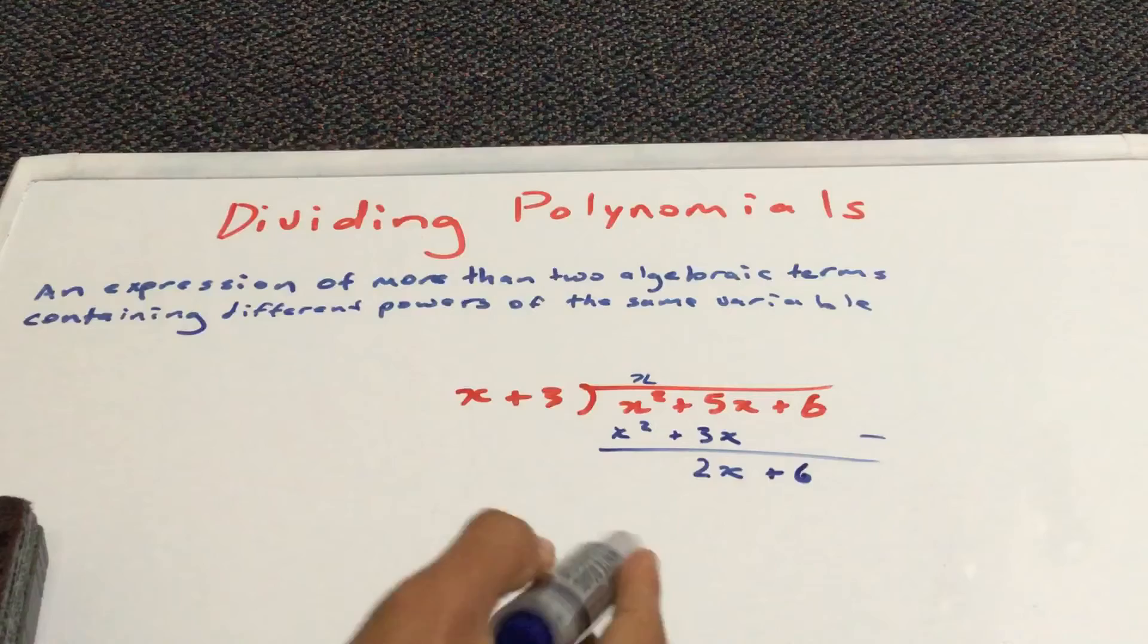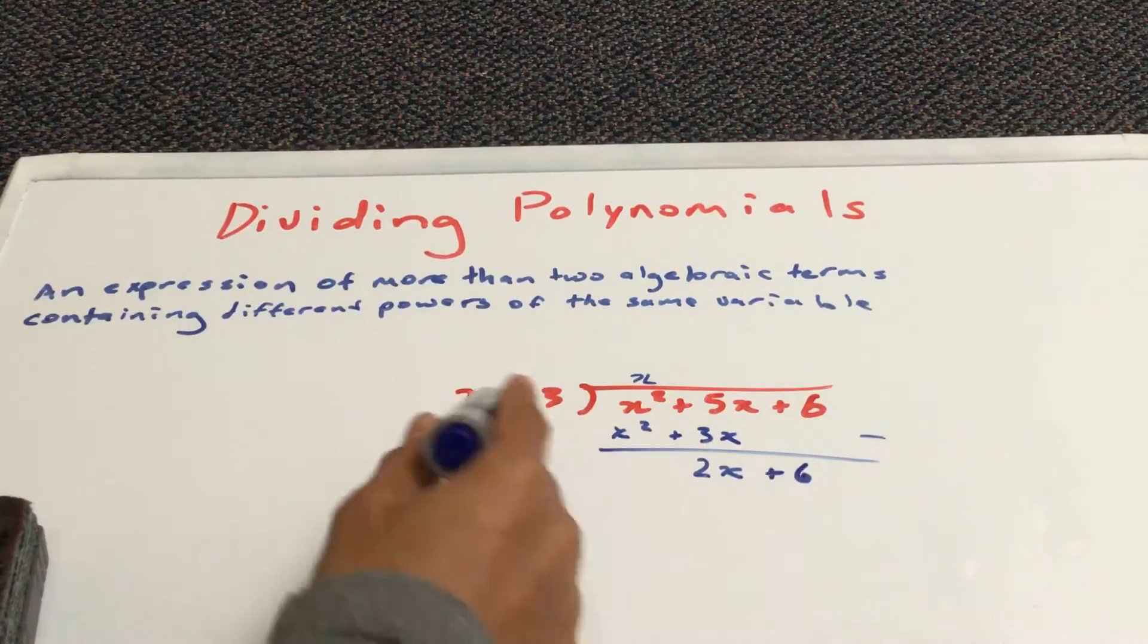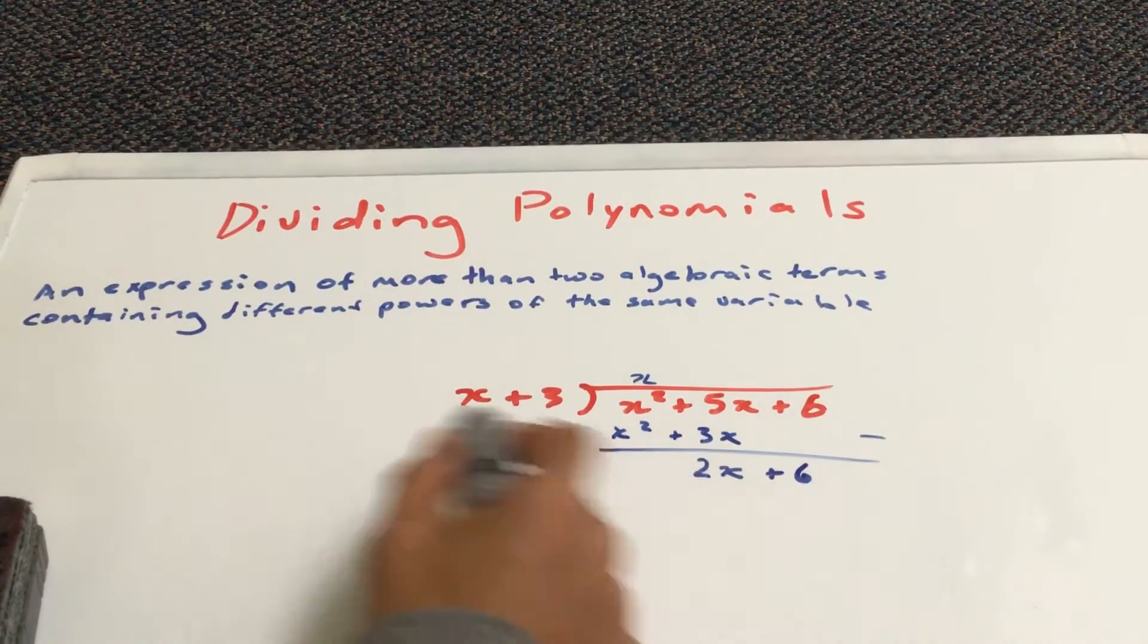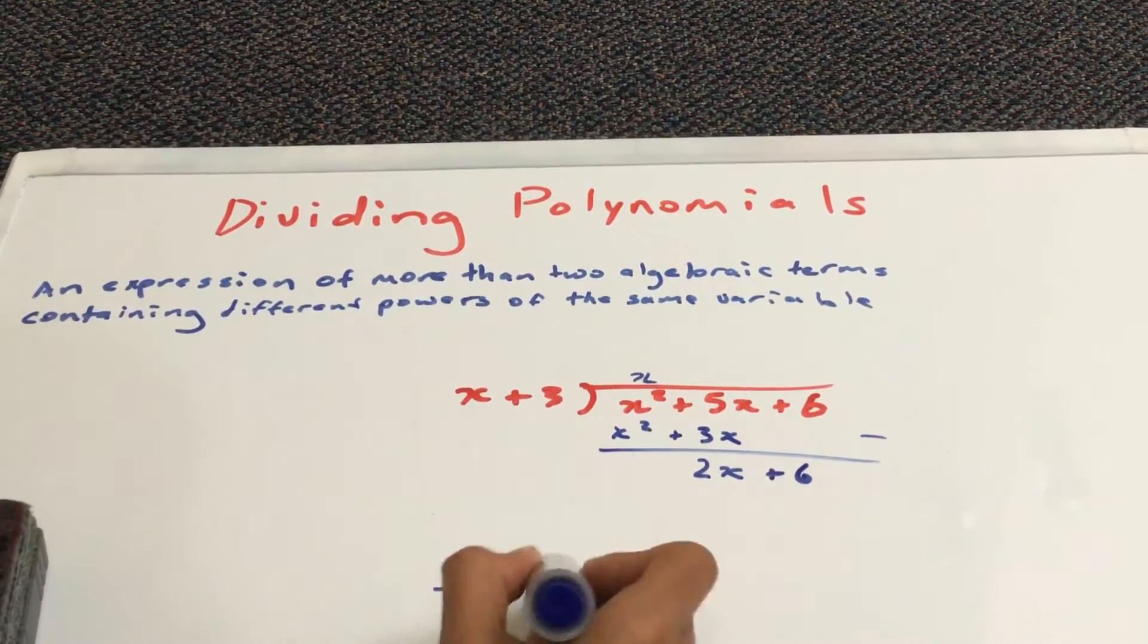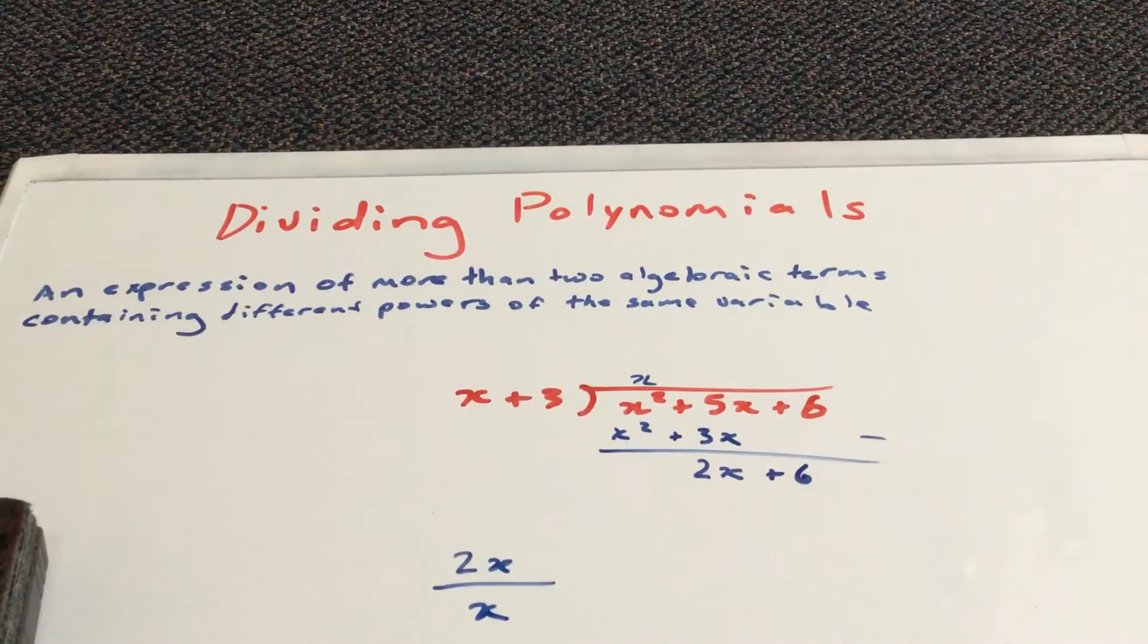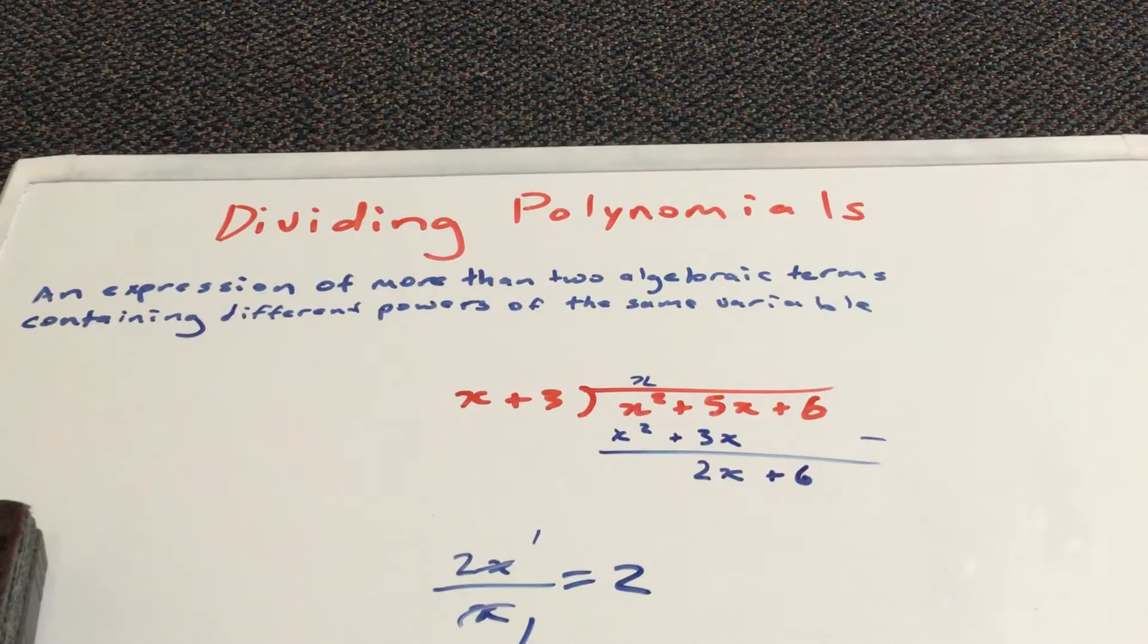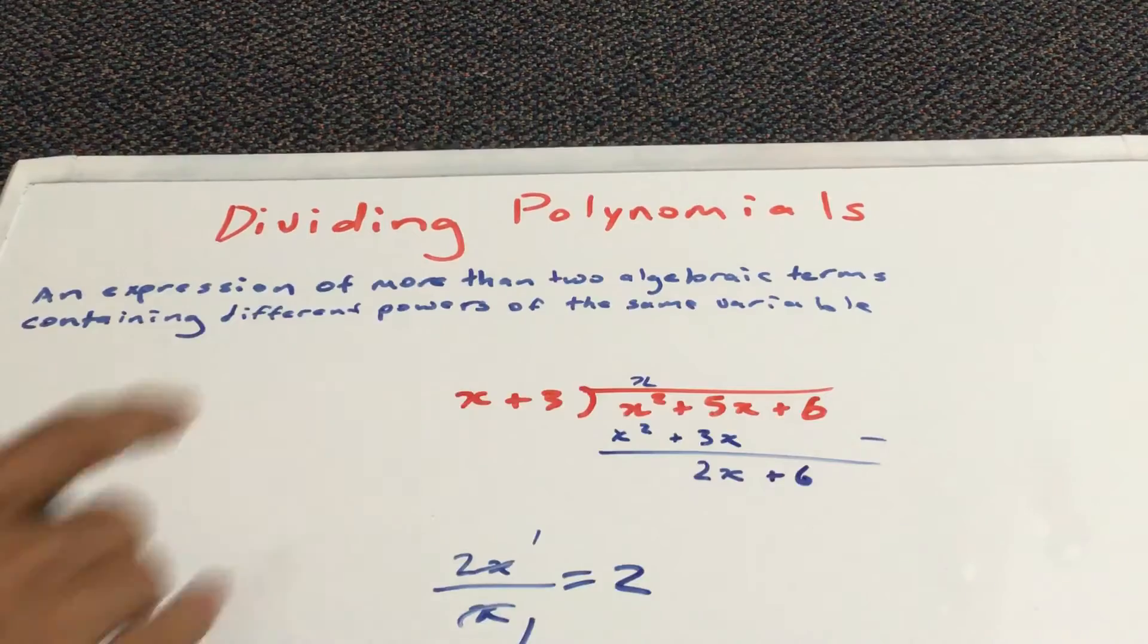So, now, 2x plus 6. We take this result and divide it by x plus 3. So, 2x plus 6 divided by x plus 3. We'll do this in parts. First of all, 2x divided by x. You should get a result of 2 as the x is cancelled out and give you 1. 2 over 1 is equal to 2. And that's how you get 2.